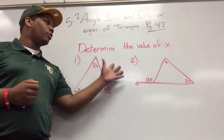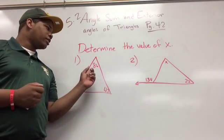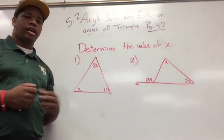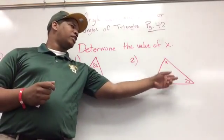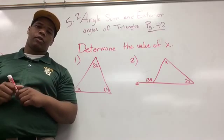Okay, so here are your two practice problems for your homework. Determine the value of x in each of these triangles. In the first triangle you have 86, 47, and x. And the second one you have x, 22, and an exterior angle of 134.